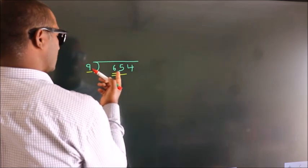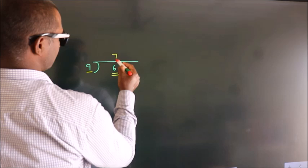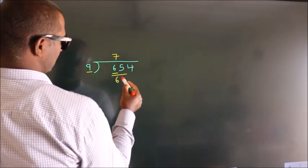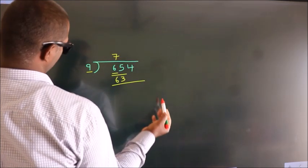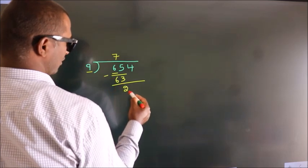A number close to 65 in the 9 table is 9 times 7, which is 63. Now we should subtract, we get 2.